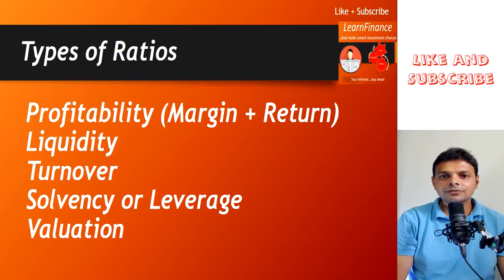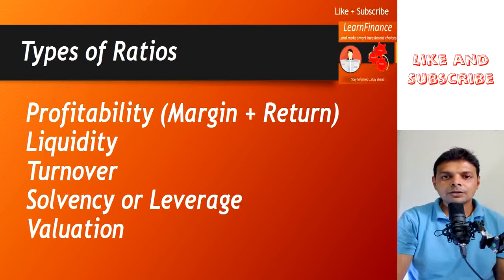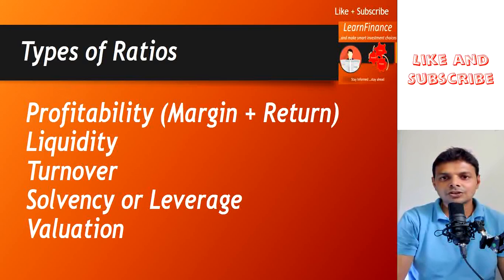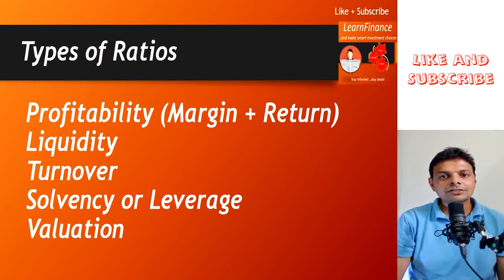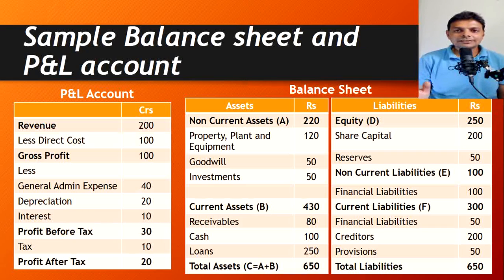There are two types of profitability ratios. First, margin-based ratios, which tell you whether the company's margin is aligned with other companies and whether it is sufficient. Second, return-based ratios — as an investor, these tell you whether a company is giving the right returns from a profit standpoint.